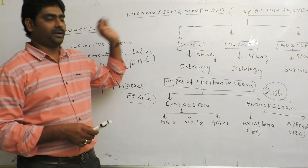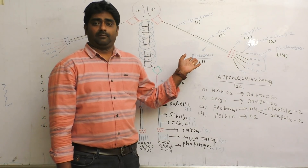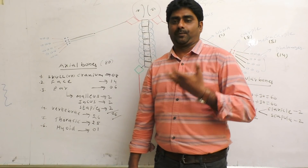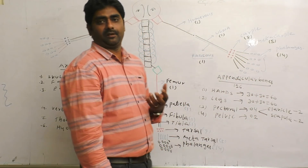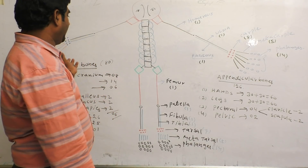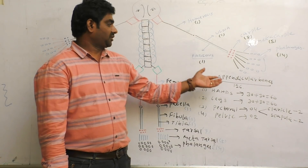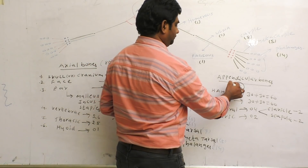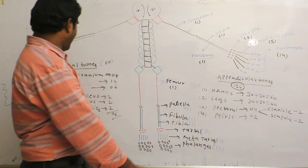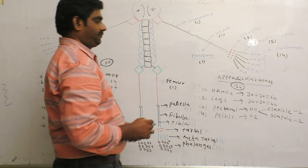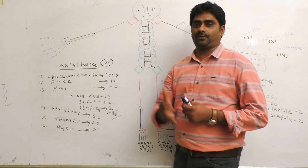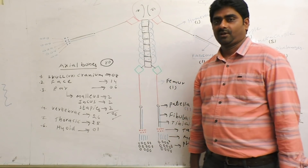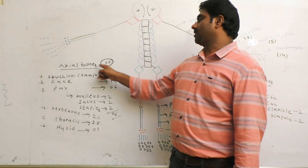This is the Skeleton Diagram. A human adult body consists of 206 bones. In the Endoskeleton System, Appendicular Bones total 126 and Axial Bones total 80, giving a total of 206 bones. Let us now discuss Axial Bones. Axial Bones total 80.